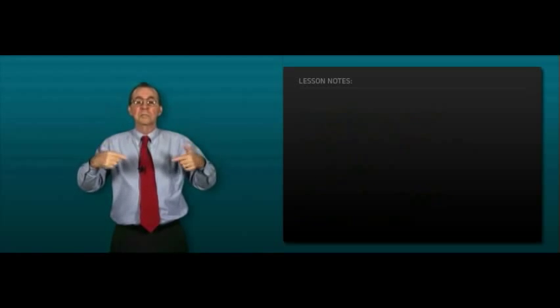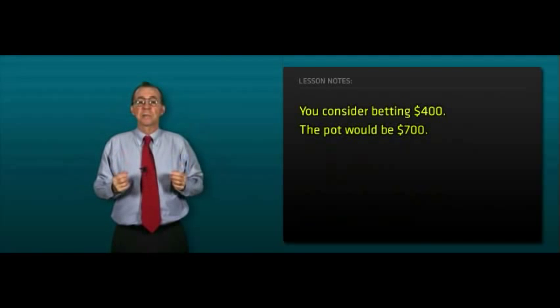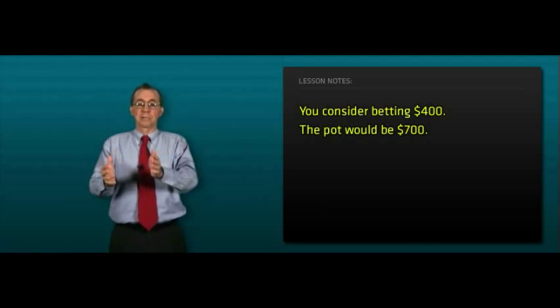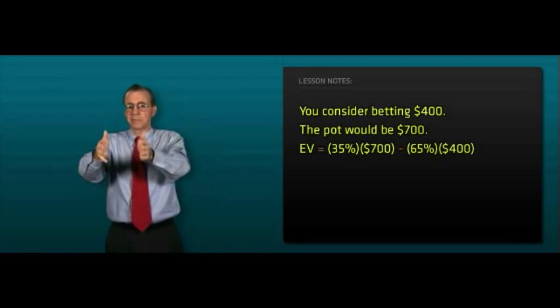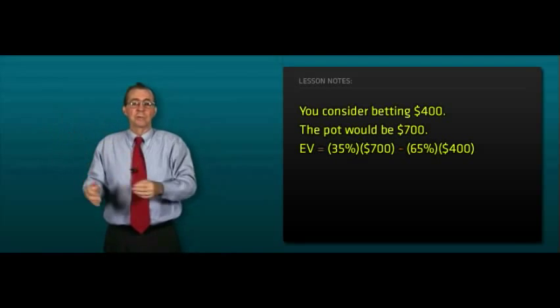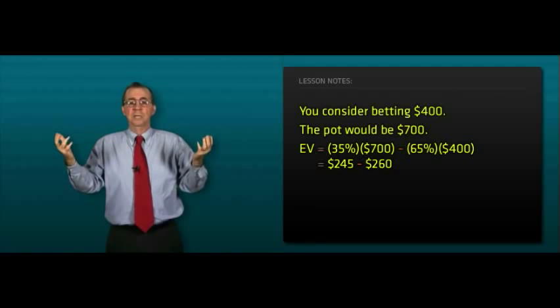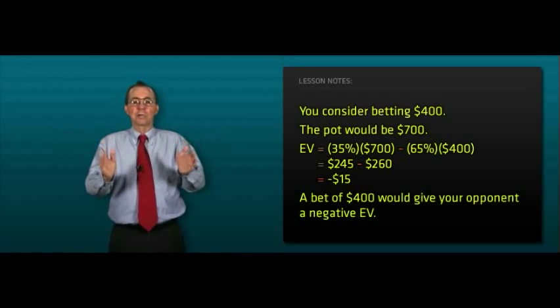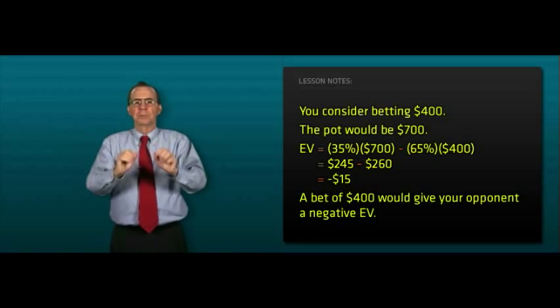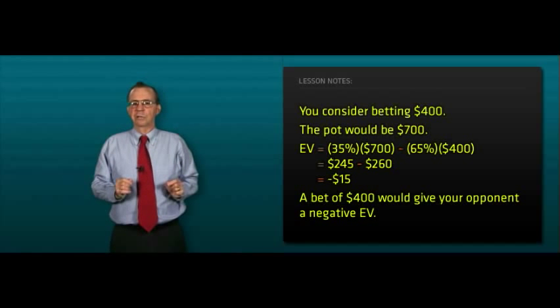We now consider betting $400 and we do this mentally. If we did, the pot would then be $700. His expected value, 35% times $700 minus 65% times $400, $245 minus $260 equals minus $15. A bet of $400 would push our opponent into negative expected value territory.